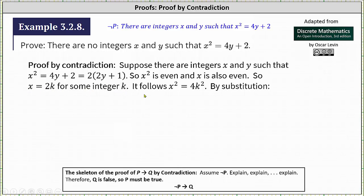Squaring both sides of this equation, it follows that x squared equals 4k squared. By substitution, using the equations x squared equals 4k squared and x squared equals 2 times the quantity 2y plus 1, we have the equation 4k squared equals 2 times the quantity 2y plus 1. Dividing both sides by 2, we have 2k squared equals 2y plus 1.